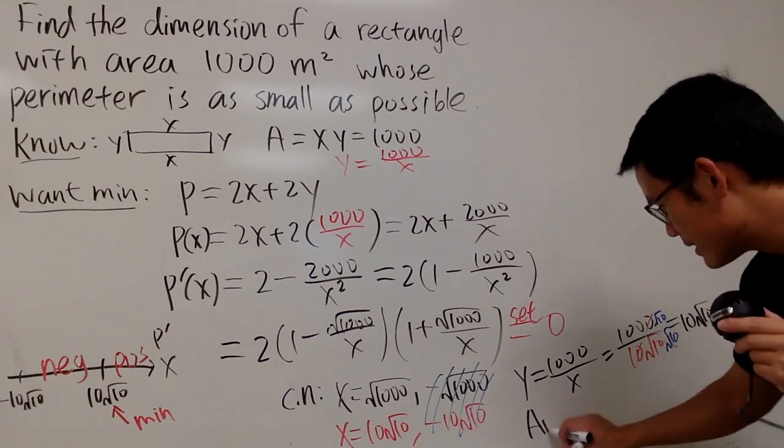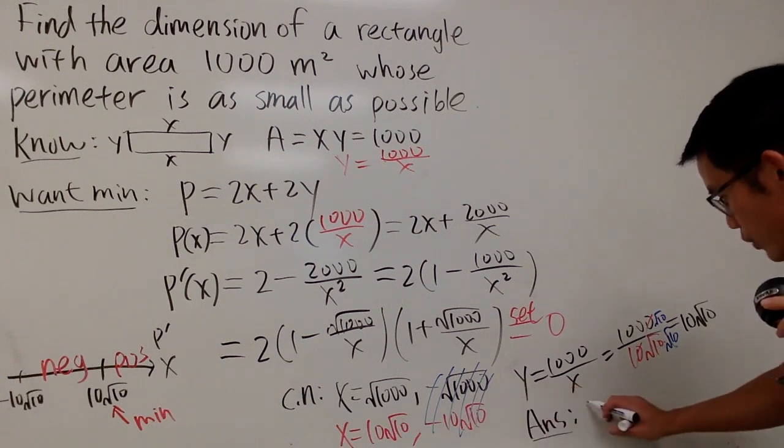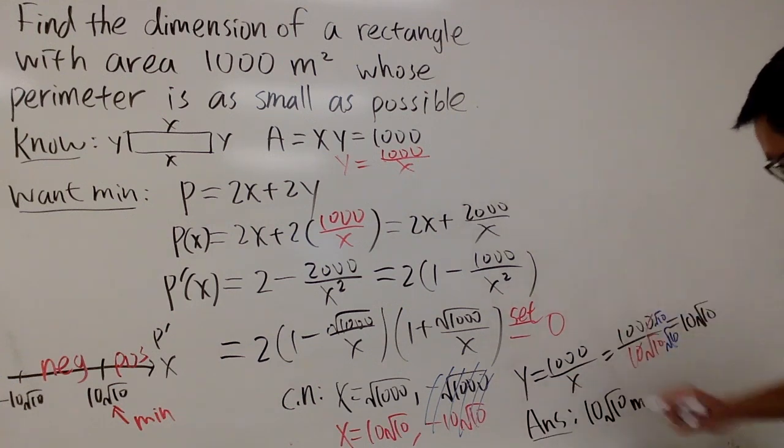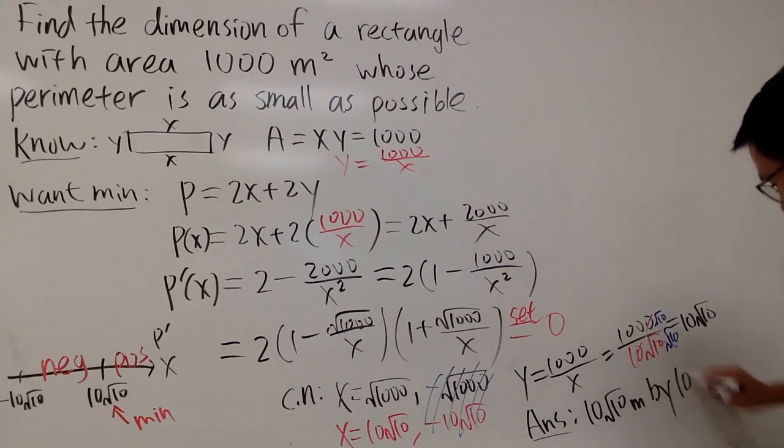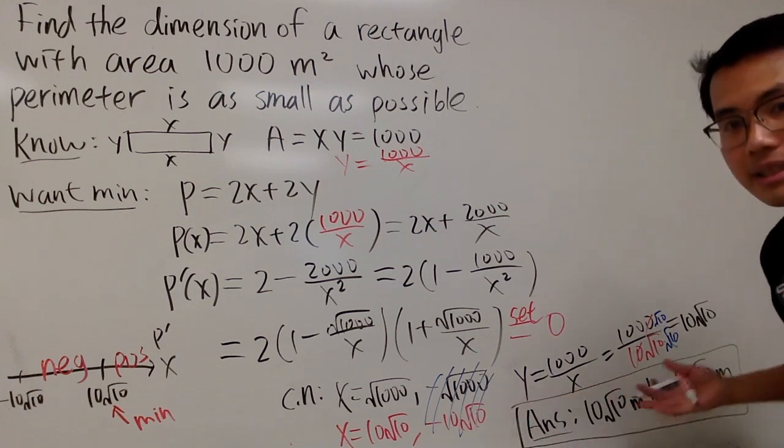Anyway, finally, I will just tell you guys the answer, which is going to be the dimension. Namely, we'll just put down 10 square root of 10 meters by 10 square root of 10 meters. And with that, we are done.